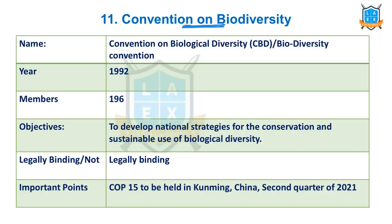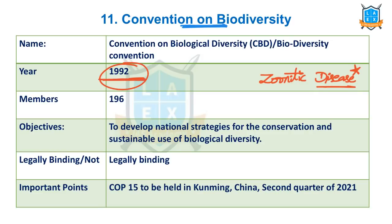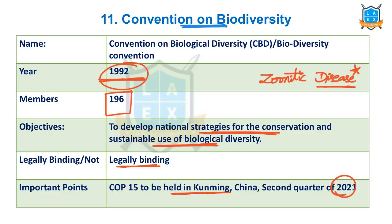The next important convention is the Convention on Biodiversity. Why is this in news? Because of COVID-19 — we need to protect biodiversity otherwise we risk zoonotic diseases. This convention was also proposed under the 1992 Earth Summit. There are 196 member countries. It develops national strategies for conservation and sustainable use of biological diversity. It is legally binding. COP 15 of the Convention on Biodiversity will be held in 2021 in Kunming, China.